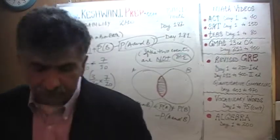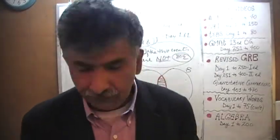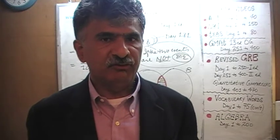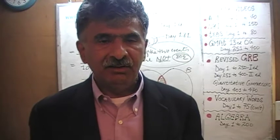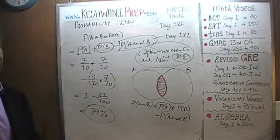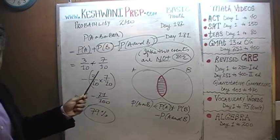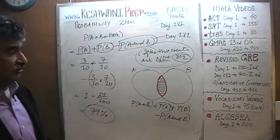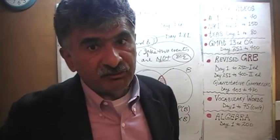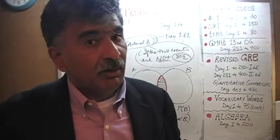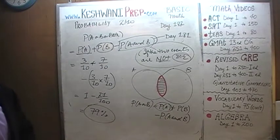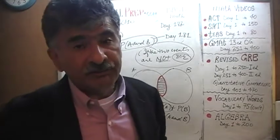The bottom line: if two people are working independently on a given problem, one with 30% chance and the other with 70% chance of success, and you ask what are the odds they will both succeed, the answer is only 21%. But if you ask what are the chances that at least one of them will succeed — either A succeeds or B succeeds or they may both succeed — the answer is 79%.